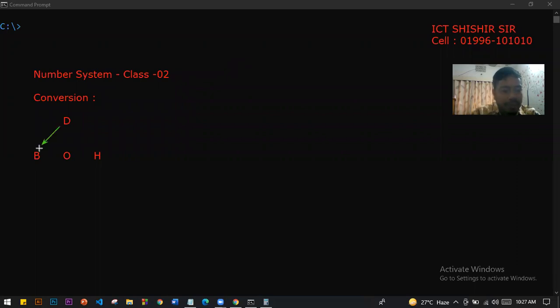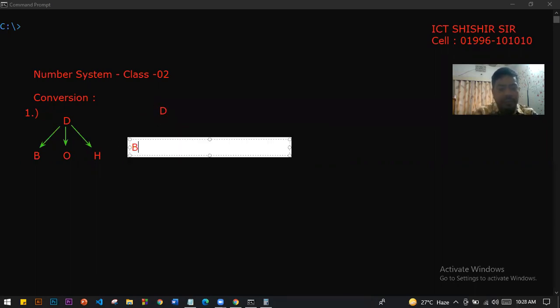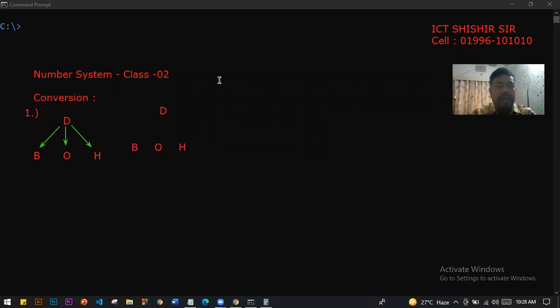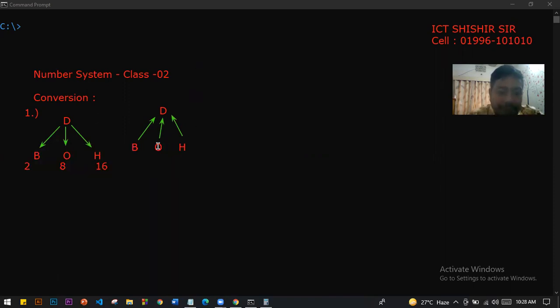So we have decimal to binary, decimal to octal, and decimal to hexadecimal. Binary is base 2, octal is base 8, so we have 8-base to 10-base, and 16-base to 10-base. We have different bases.